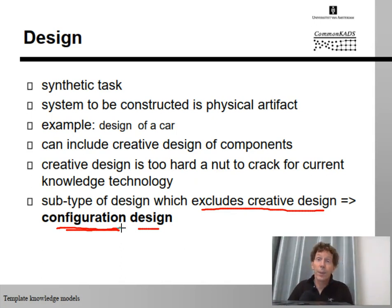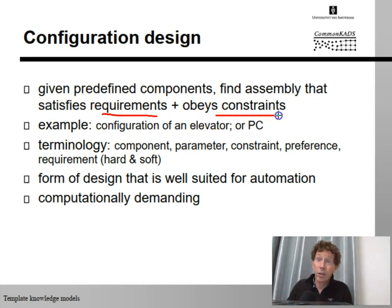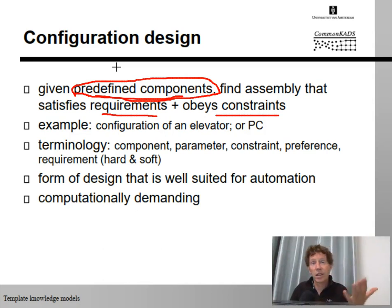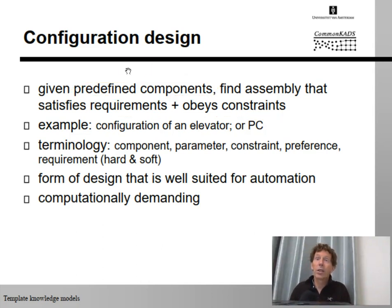In general, the idea of configuration design is that we are given not only a set of requirements and constraints, but also predefined components, and we need to find an assembly that satisfies the requirements and constraints. The crucial bit is those predefined components, because that squeezes out the creativity — we already know the PC has to consist of a hard disk, a keyboard, memory, a screen, etc. All we need to do is pick the right ones and assemble them to satisfy requirements and constraints. We will later see what we mean by the distinction between requirements and constraints.